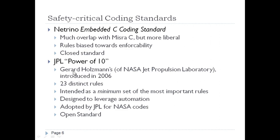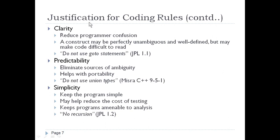JPL Power of 10, by Gerard Holzmann, stands for Jet Propulsion Laboratory, and was introduced in 2006 by NASA. It has 23 distinct rules intended as a minimum set of the most important rules. It is designed to leverage automation, has been adopted by JPL for NASA code, and is an open standard.